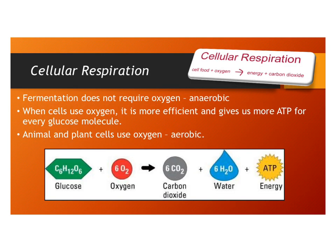A better way of getting energy from glucose is called cellular respiration. Fermentation does not require oxygen — it's called anaerobic, meaning no oxygen. But when cells use oxygen, it's more efficient and gives a lot more ATP for every glucose molecule. Animal and plant cells use oxygen — we call this aerobic, meaning with oxygen. You have food plus oxygen, you get a lot of energy, and then you make carbon dioxide, which we breathe out.